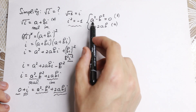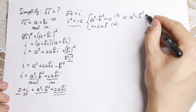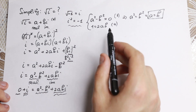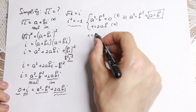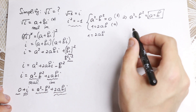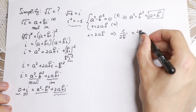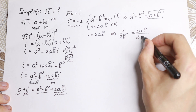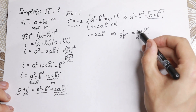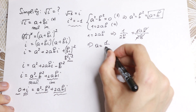Now let's solve these. From equation 3, a² = b², and taking the square root of both sides gives a = b. Next, from equation 4, 1 = 2ab. Dividing both sides by 2b, we get a = 1/(2b). So a = 1/(2b).